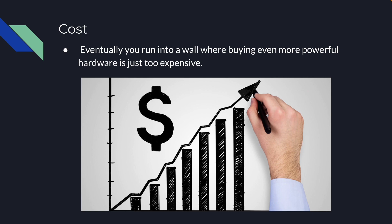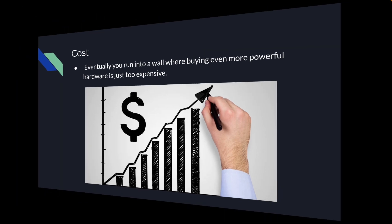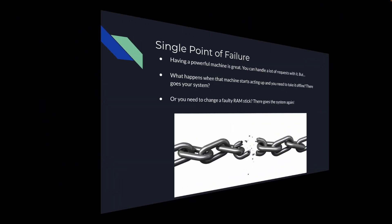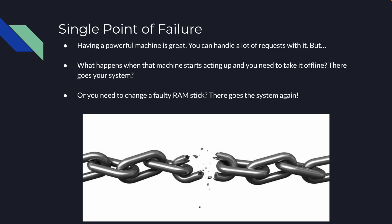One issue with vertical scaling is the cost. Eventually you're going to run into a wall where buying even more powerful hardware is just too expensive. Another issue is that you're going to hit an upgradability ceiling — a motherboard can only fit so much RAM, SSDs are only sold with so many terabytes, and eventually you'll just buy the most powerful CPU on the market. What do you do then?